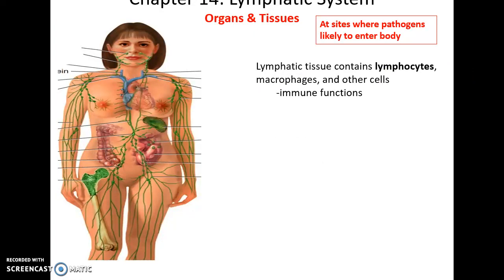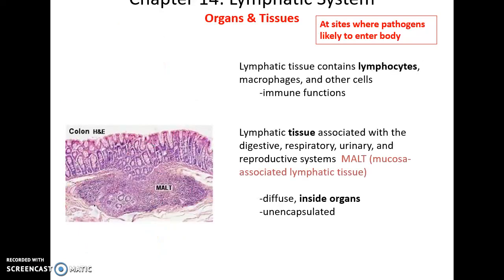There are various organs and tissues important for the immune functions of the lymphatic system. In these tissues you will find lymphocytes, macrophages, and other cells, localized in high concentrations around areas where pathogens might enter the body. Lymphatic tissues are found in many organs such as the small intestine, large intestine, bronchioles, and urinary bladder. These tissues are referred to as MALT, or mucosa-associated lymphatic tissue, because they are near the mucosal surface and are unencapsulated and diffuse, found as part of these other organs.